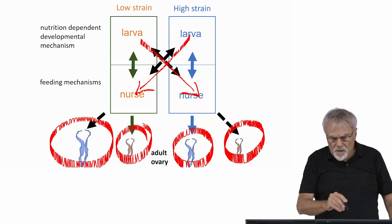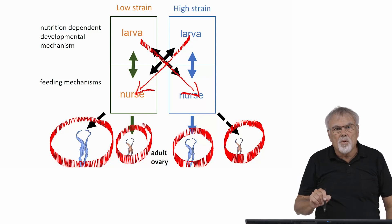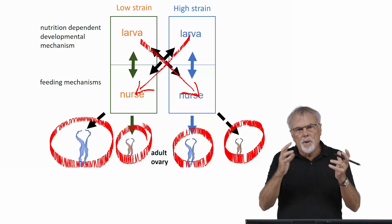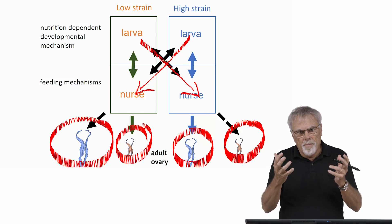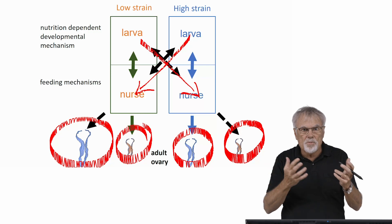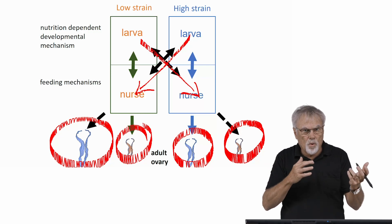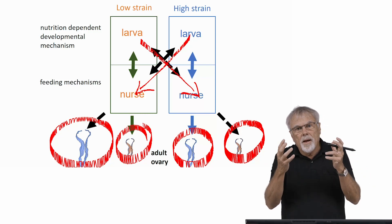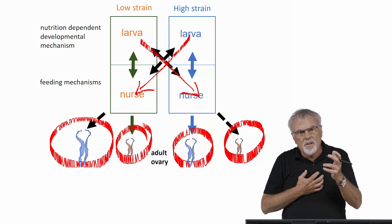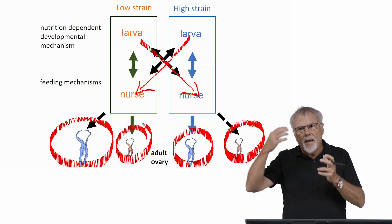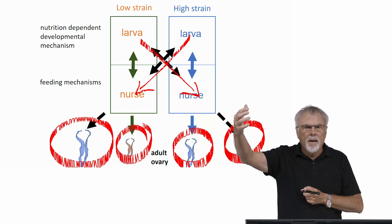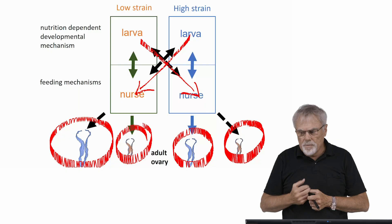This clearly shows that the developmental program of a honeybee — whether queen, nurse bee, or worker — is shared between the development of the larva itself and the feeding behavior of the nurse bees.